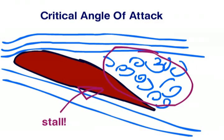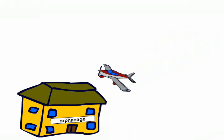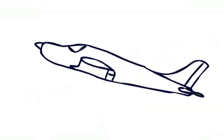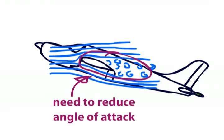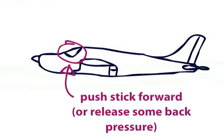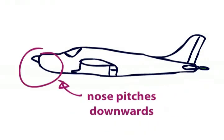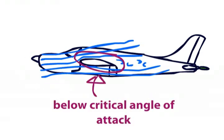You're not going to want to be in a stall for too long, as otherwise the houses get big. Getting out of a stall is very easy — you just need to reduce the angle of attack. Usually this is done by moving the stick forward, which pitches the nose of the aircraft down and gets the wing back below the critical angle.